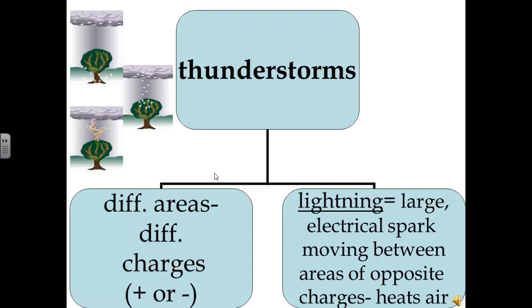Different areas of a thunderstorm cloud have either positive or negative electrical charges. They may be caused by the precipitation colliding in the air currents of the cloud. The negative charges on the cloud cause positive charges to gather in the ground below, making the lightning go from negative to positive, from the clouds to the ground.